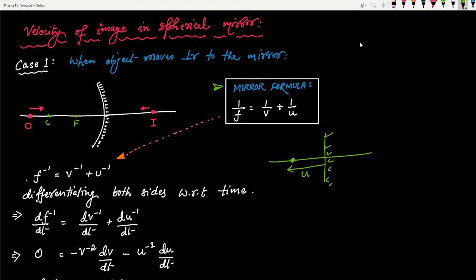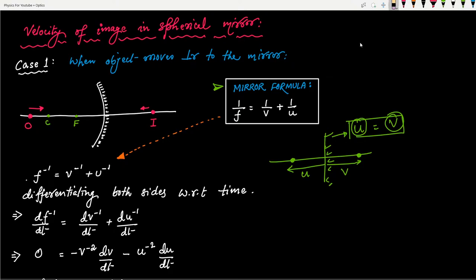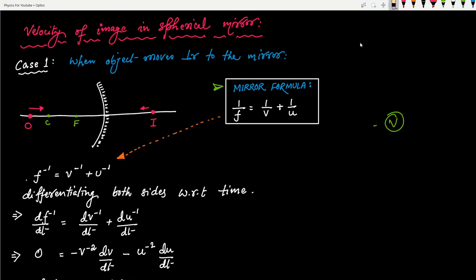For the plane mirror, the image is always formed at the same distance behind the mirror, so u equals v. Once we got this relationship, we differentiated it to get velocity — because v and u are nothing but positions or displacements from the pole, and differentiation of displacement gives us velocity. Similarly, we'll use the same technique here. The relationship between image distance and object distance in spherical mirror is given by the mirror formula, which I derived in part 5 and explained with numericals in part 6.